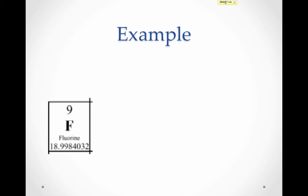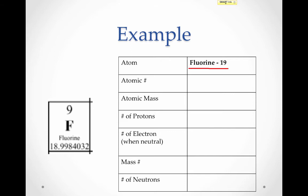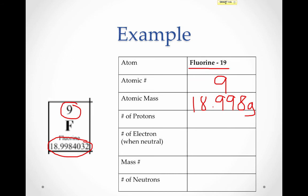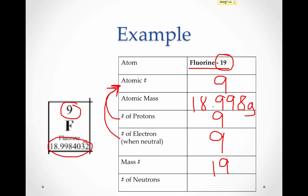Let's look at an example. Given the box from the periodic table for fluorine, as well as the name fluorine-19, we can fill in this entire chart. Starting with the atomic number, which is 9, and the atomic mass, which I'm going to round off to 18.998 grams. The number of protons is equal to the atomic number. The number of electrons in a neutral atom is also equal to the atomic number — you'll be told when it's not a neutral atom. The mass number is written at the end of the name: fluorine-19, so the mass number is 19. Finally, for the number of neutrons, since the mass number equals the number of protons plus neutrons, we take the mass number minus the number of protons to get the number of neutrons, which is 10.